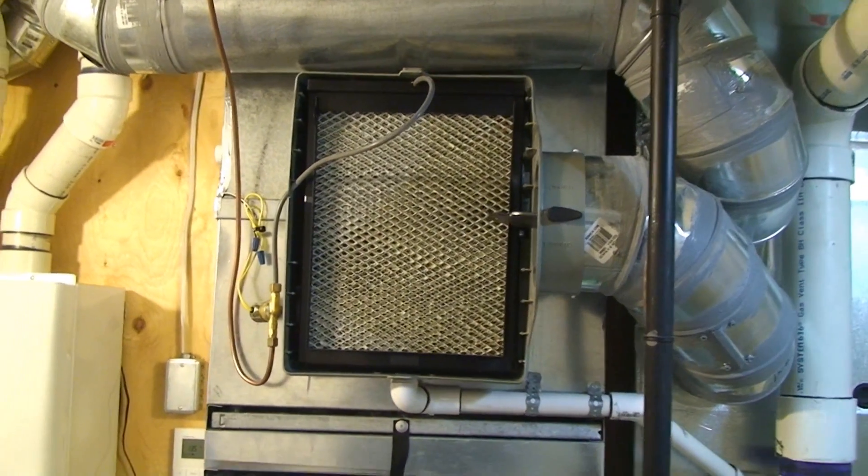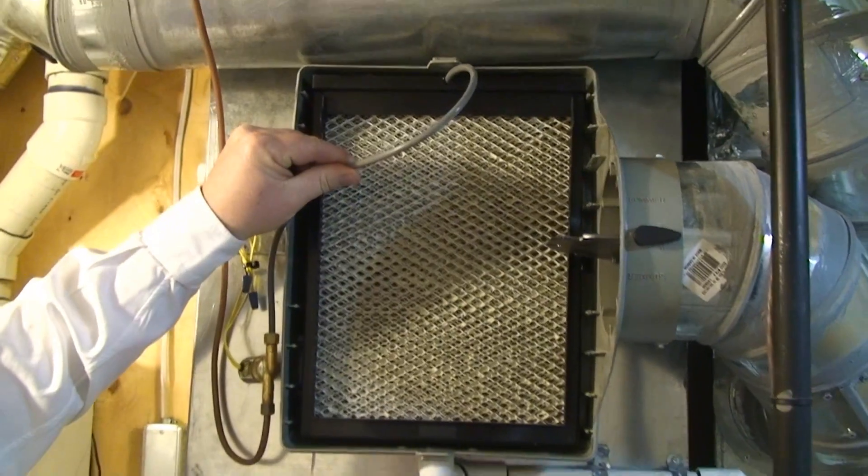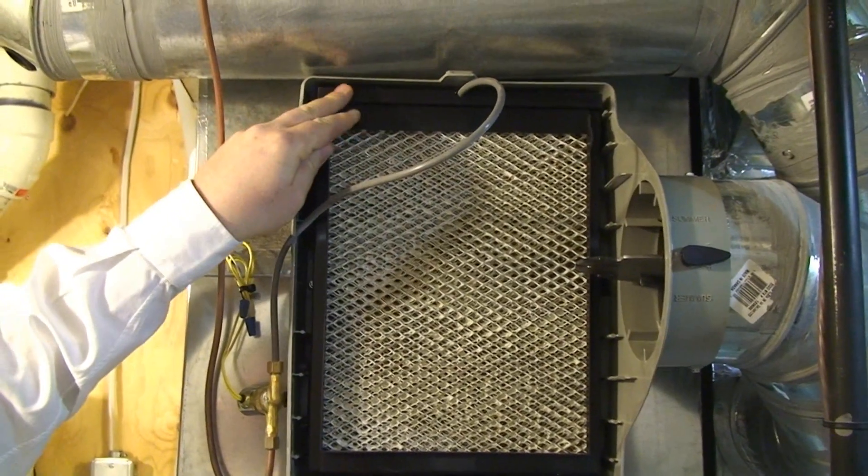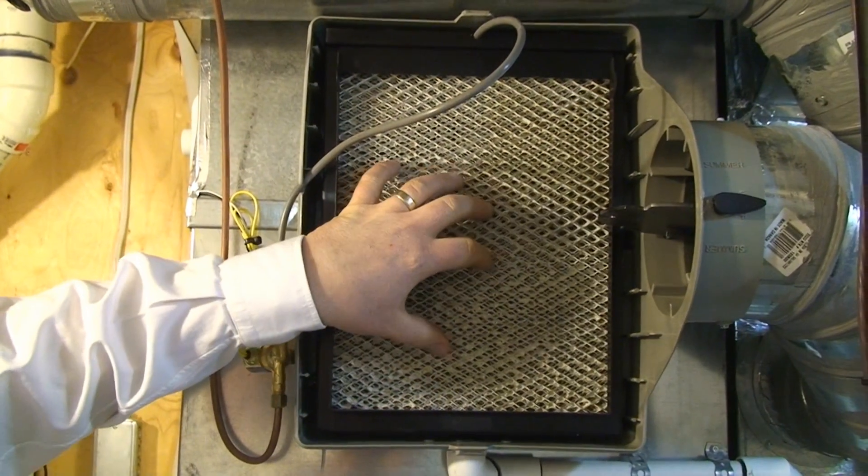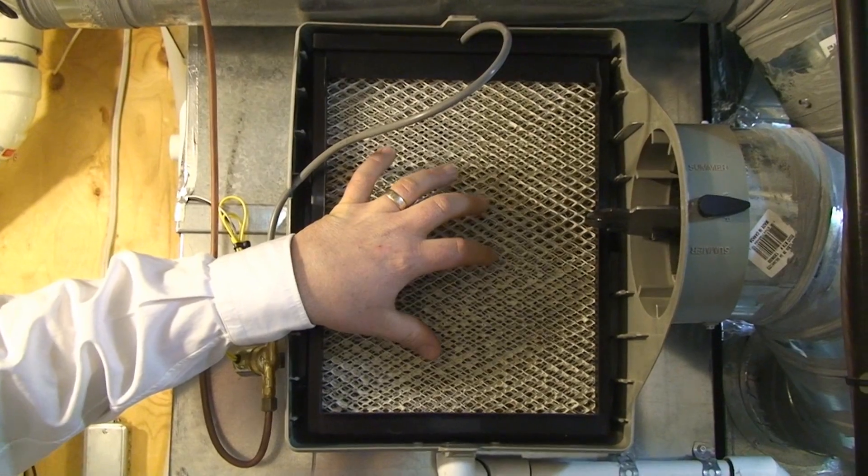We have the feeder tube that provides water to the evaporator pad, the distributor tray up top, as well as the whole frame, and then we have the evaporator pad inside.